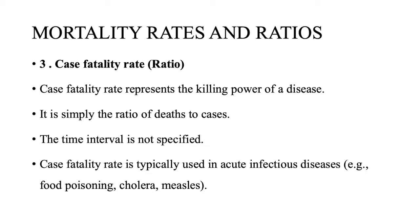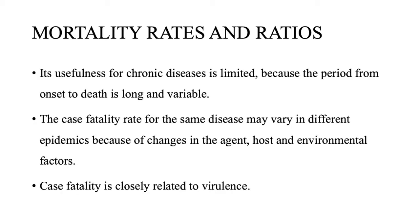Then comes the case fatality rate or ratio. It represents the killing power of a disease — it is simply the ratio of deaths to cases, and the time interval is not specified. Case fatality rate is typically used in acute infectious diseases, such as food poisoning, cholera, and measles. In chronic diseases its usefulness is limited because the period from onset to death is long and variable. The case fatality rate for the same disease may vary in different epidemics due to changes in agent, host, and environmental factors — for example, influenza may have a different rate in winters versus summers. Case fatality is closely related to virulence; the highest case fatality is seen in diseases like rabies, which is almost 100%.